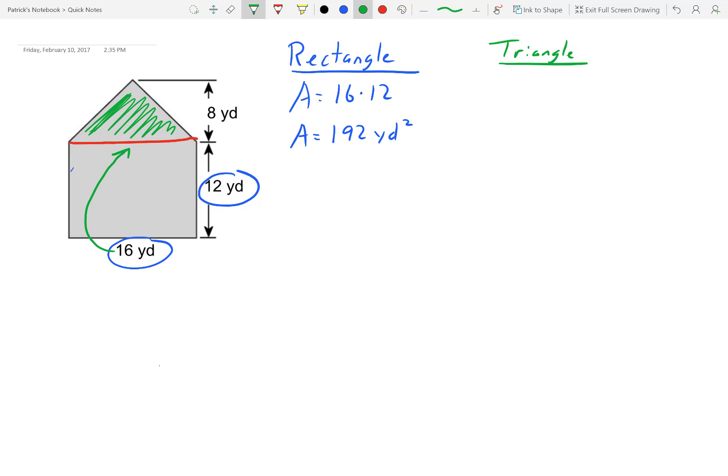But we know that a rectangle, the opposite sides are equal. And since the base of the triangle is shared as one of the sides of the rectangle, we know that it's 16 yards.